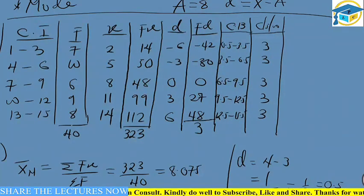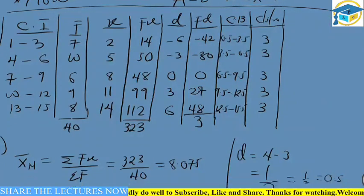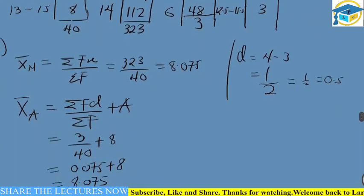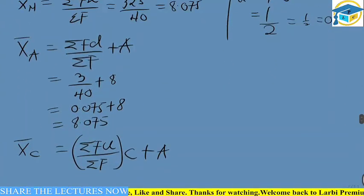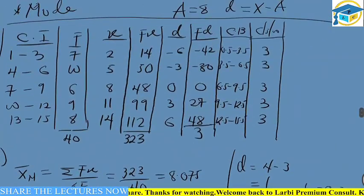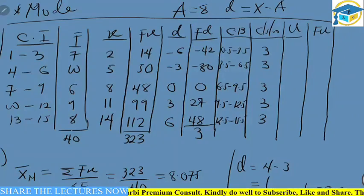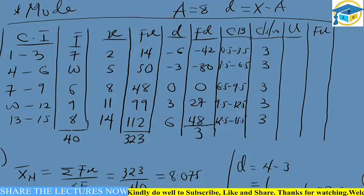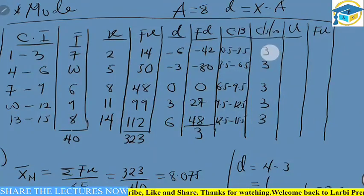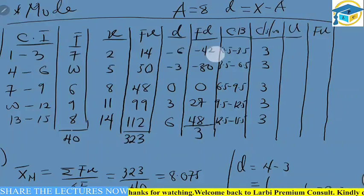We can now proceed to the coding method. We need a column for u and a column for f*u. To find u (mu), it is the deviation divided by the class width. We already have our deviations and class width, so we can calculate the u values. For example, negative 6 divided by 3 gives us negative 2.